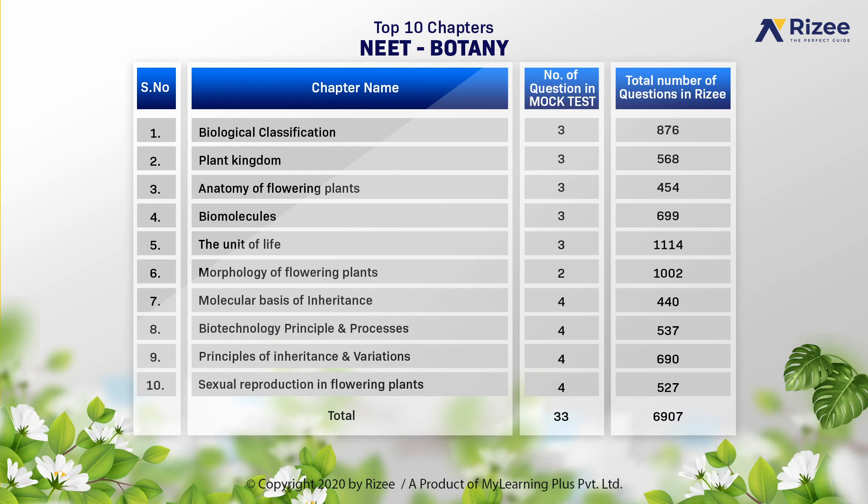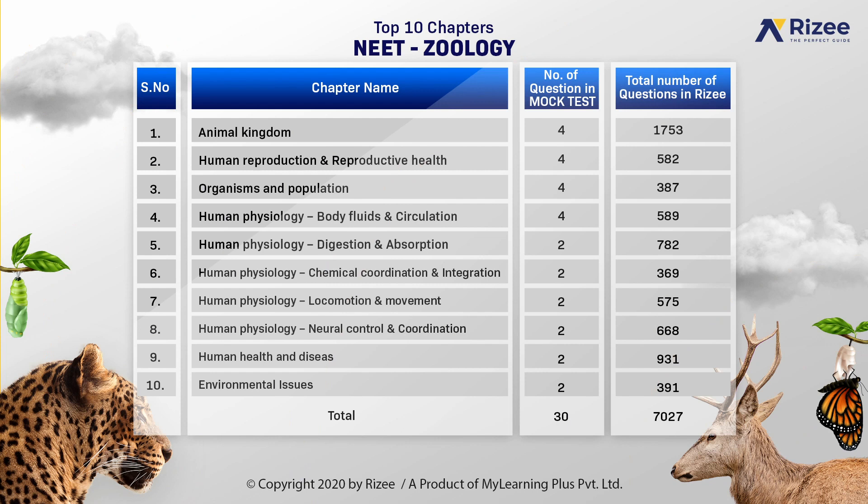Sexual Reproduction in Flowering Plants — 4 questions. The total number of questions available in various complexities, both concept-wise and application-wise, from these 10 important Botany chapters in our Rise app are 6,907 questions. Now let us have a look at the top 10 chapters of Zoology.